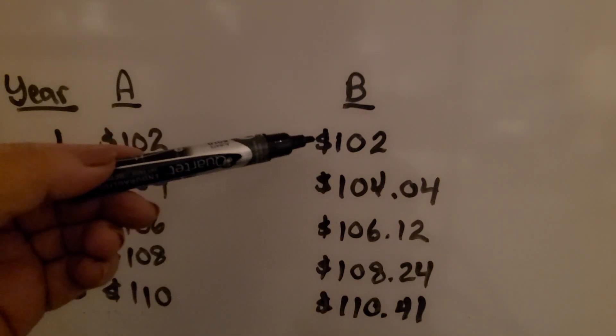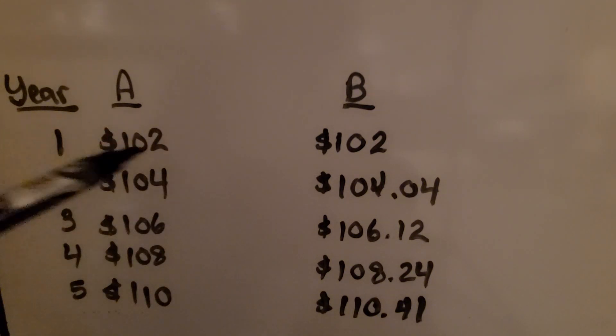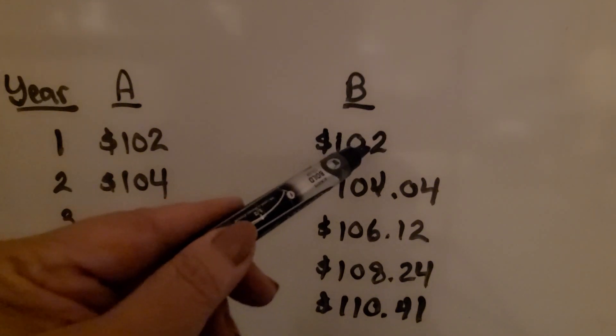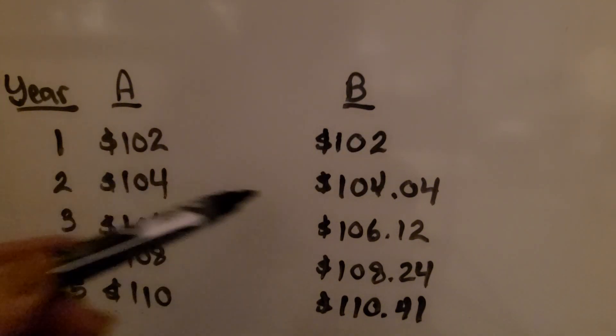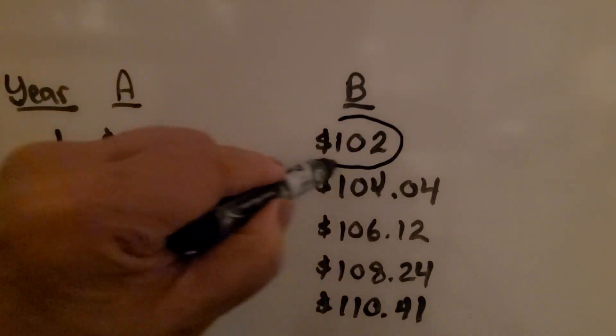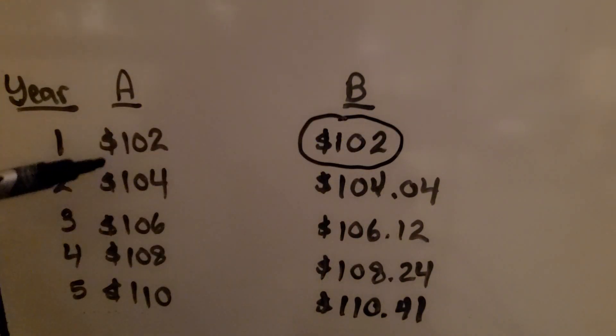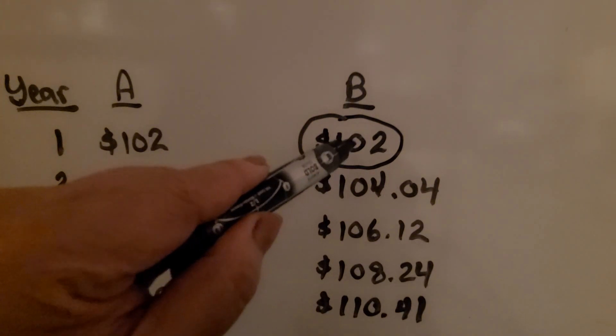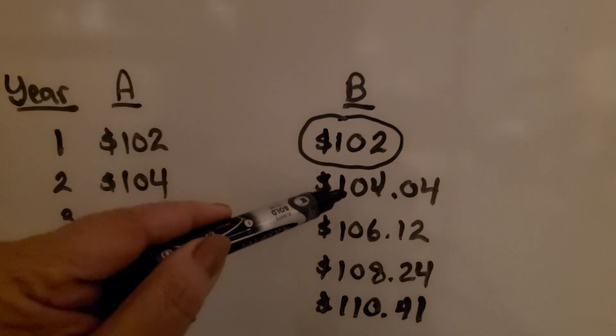For the compounded annually, what happens is in year one, we add the $2. That's 2% of $100. But in the second year, we do 2% of this amount. We don't just add $2 like the simple interest. We figure 2% of $102, and we get $104.04.